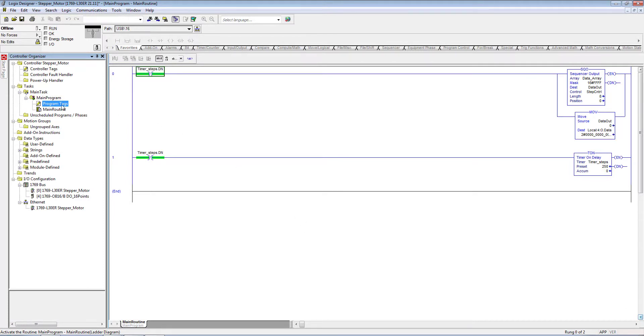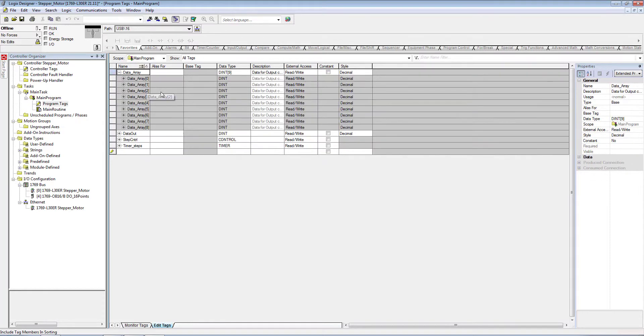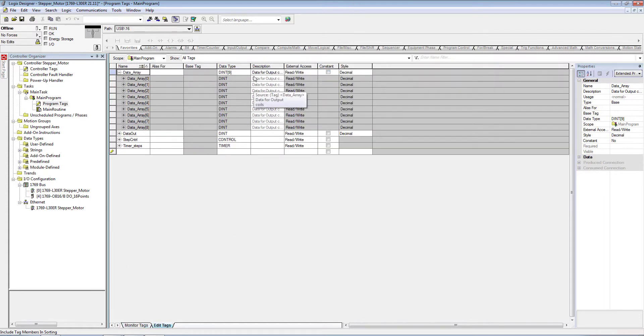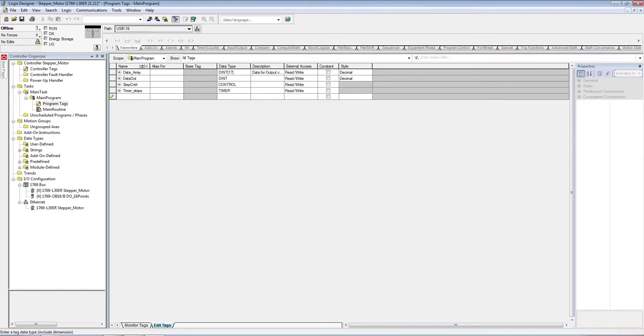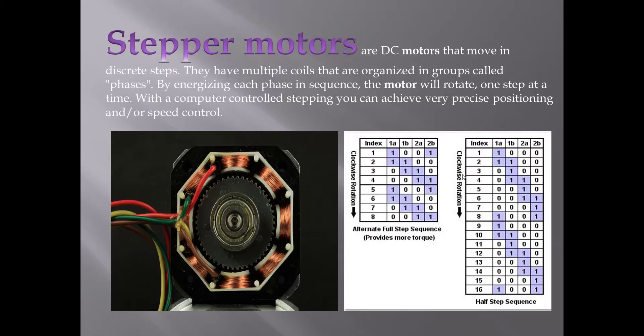In order to change it to drive the motor in half step sequence mode, what we need to do is edit this data array. Change it from 8 to 16 elements long. Change it to 17 data elements, then change its data values. If we go back here, we will see there are 16 steps and 16 data elements.